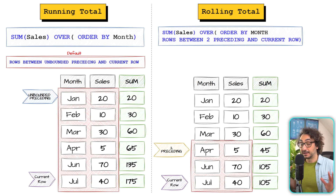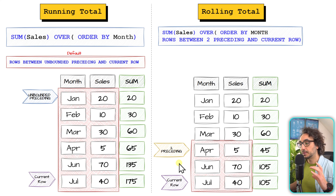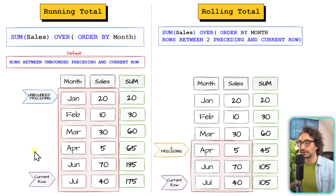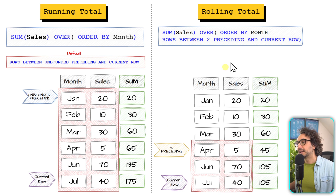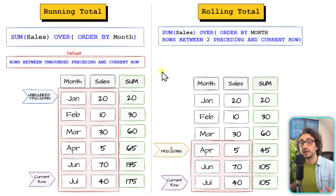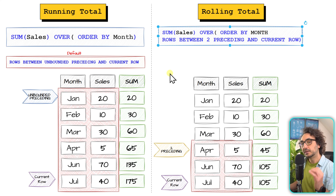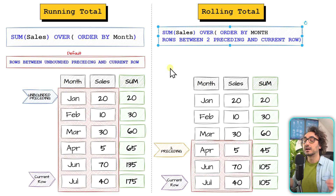The running total always considers everything from the starting position until the current row without dropping any member. The rolling total always drops the oldest member to add something new — the window keeps shifting. The running total is great for tracking like budget tracking or comparing current total sales with a target. The rolling total is for focused analysis on a specific window like three months. Both do aggregations over time and help us analyze whether our business is growing or declining. Window functions are really powerful for data analytics.